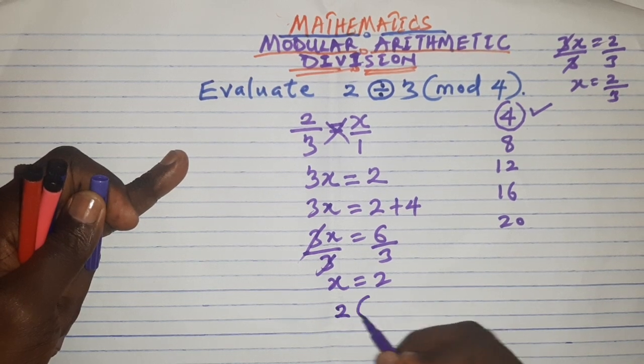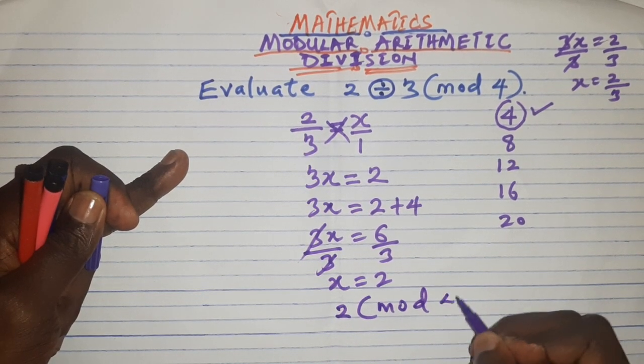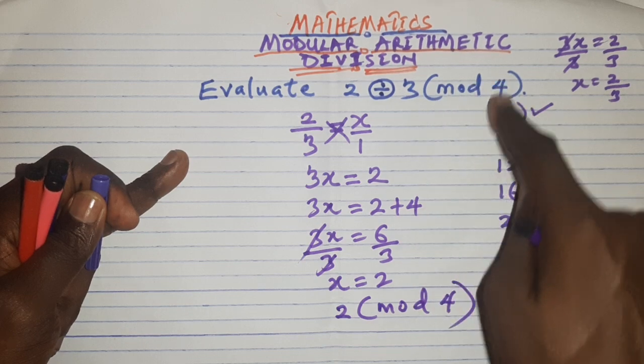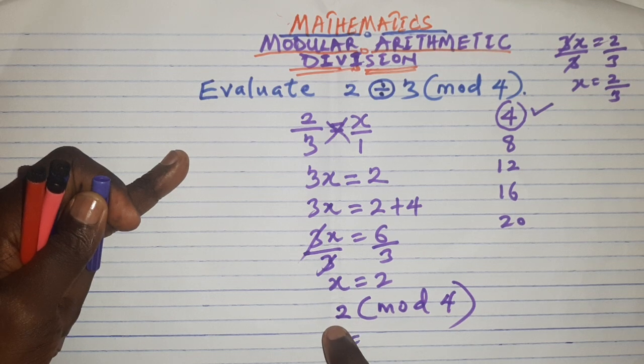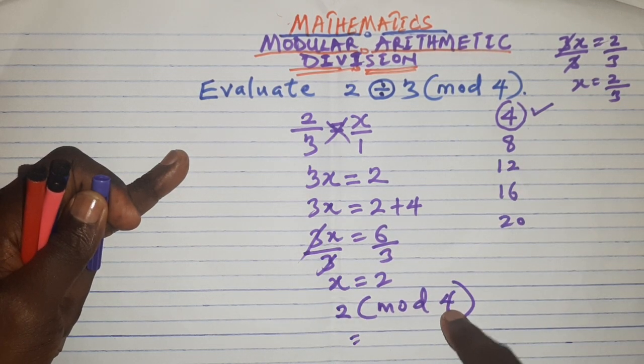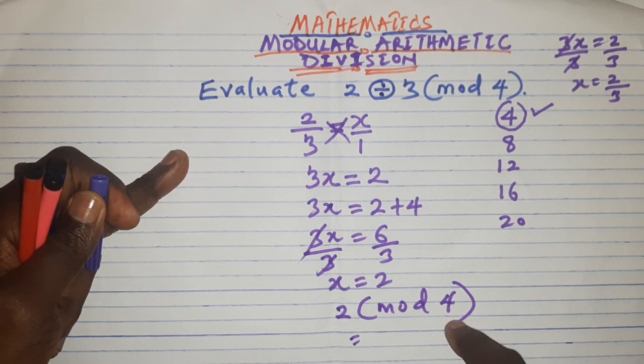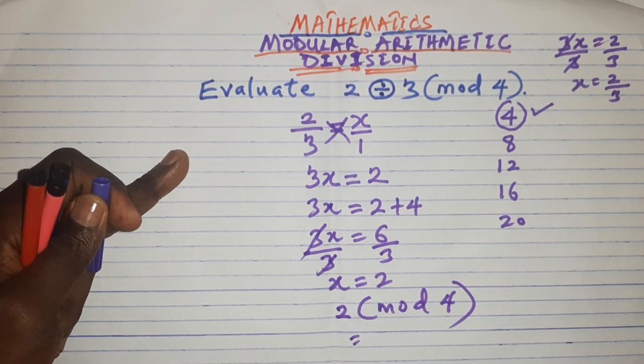So I now have 2, so my final answer will be 2 in mod 4. If you divide 2 by 3 in mod 4, you get 2 as your final answer. And it's okay because you have 2 as your answer and 2 is not even up to the mod 4. Remember your answer must be smaller than the mode itself. Very simple.